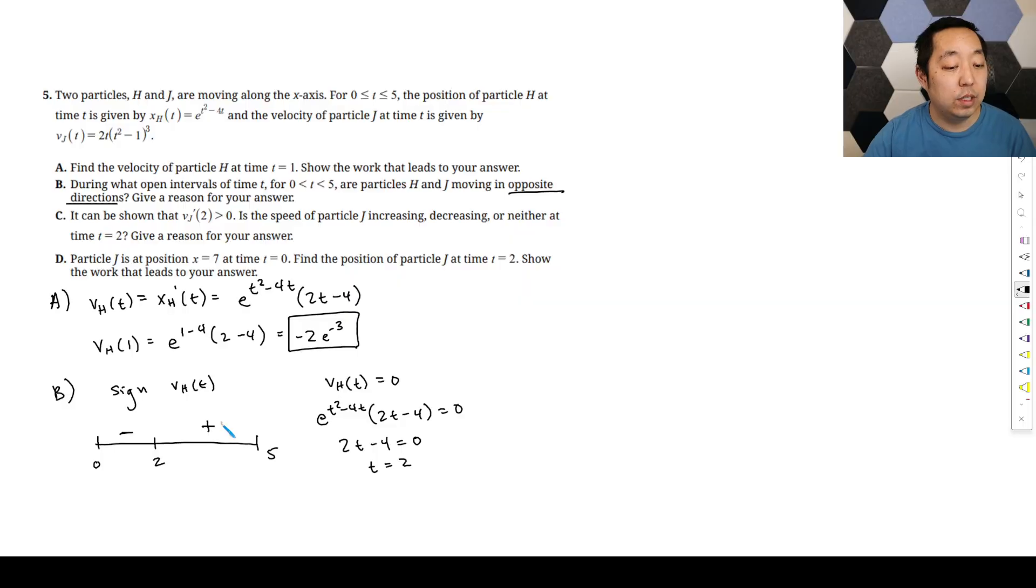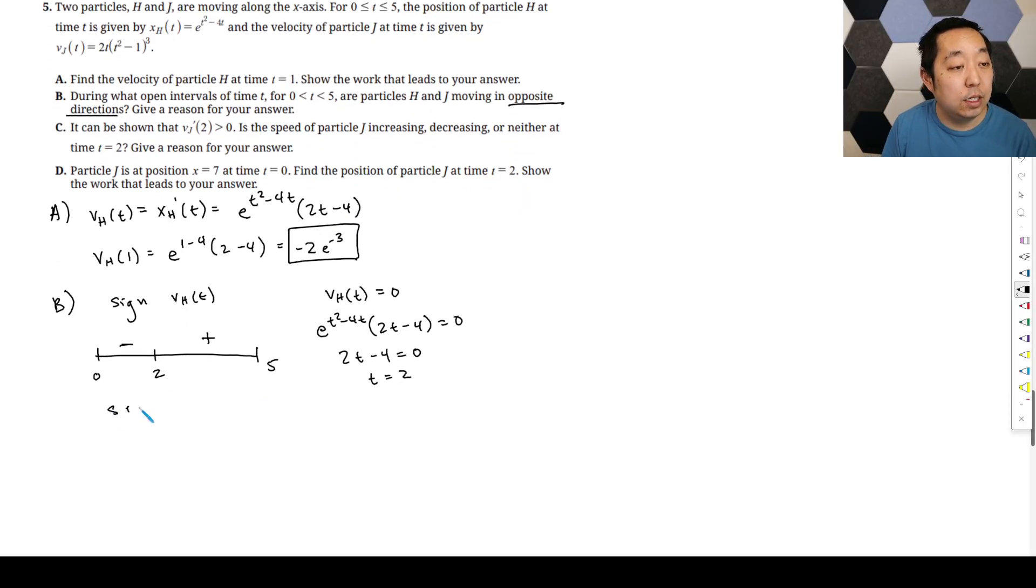Now we want to do the sign of vj(t). We need to know when the velocity of that one is 0. So vj(t) equals 2t times (t squared minus 1) cubed. We want to know when that's 0. That occurs when either 2t is 0, so t equals 0, or t squared minus 1 equals 0. That occurs at t equals plus or minus 1. But we're only going from 0 to 5, so we just care about the positive 1.